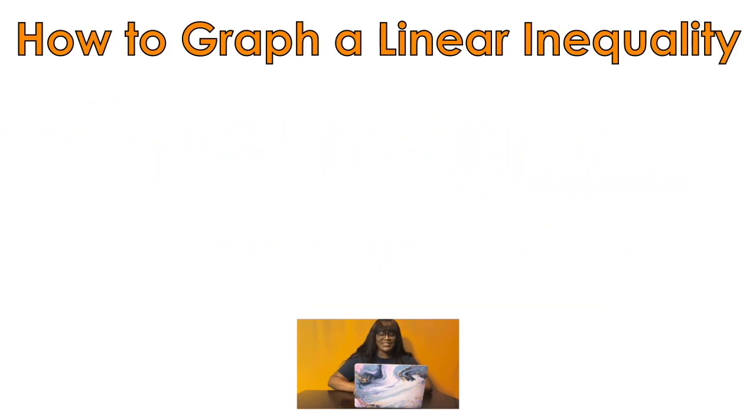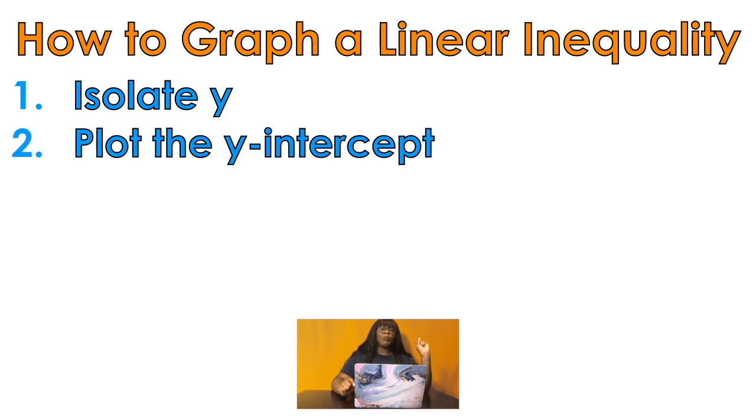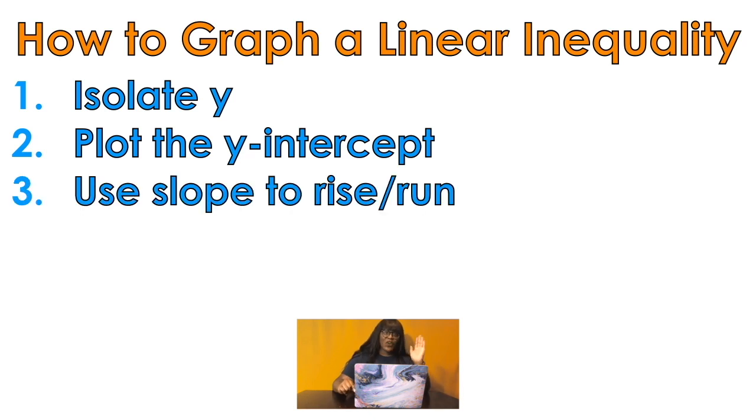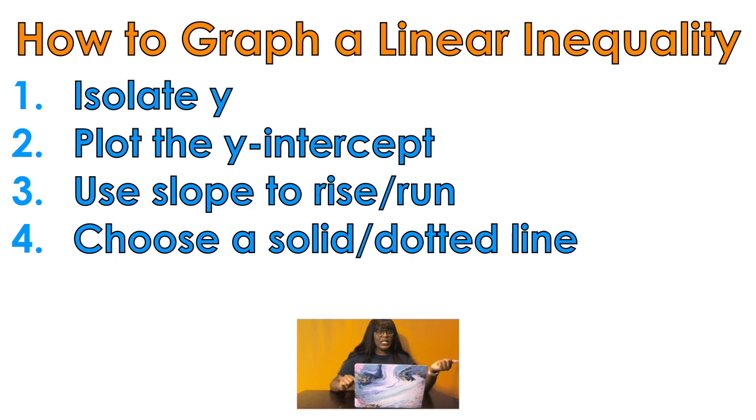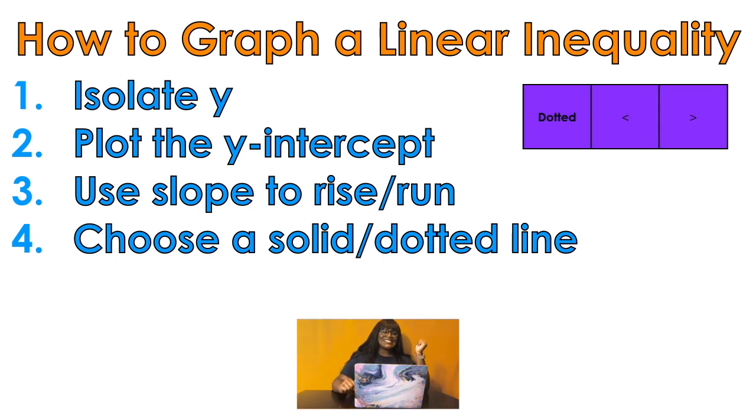How to graph linear inequalities. Step one, isolate y. Step two, plot the y intercept. Step three, use the slope to rise and run. Step four, choose a solid line or a dotted line. It's dotted if it's less than or greater than. It's solid if it's less than and equal to or greater than or equal to.